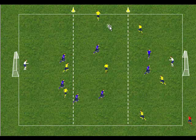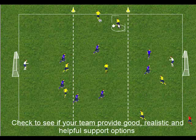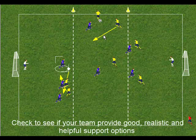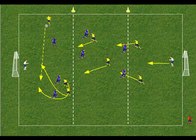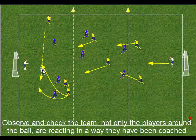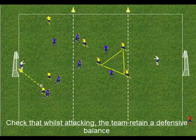As the ball is travelling, the player receiving the ball has support options behind the ball, in front of the ball and square of the ball. As the attack is developing, the coach is checking that the forwards and midfield players are reacting to support the cross and that there is a defensive balance — a defensive triangle — as the attack develops.